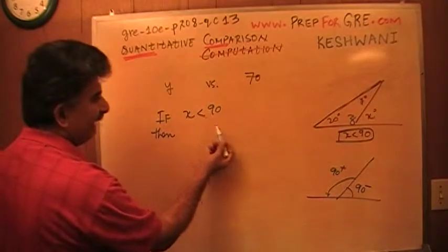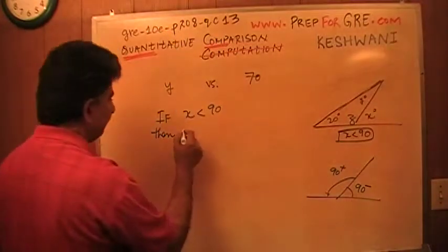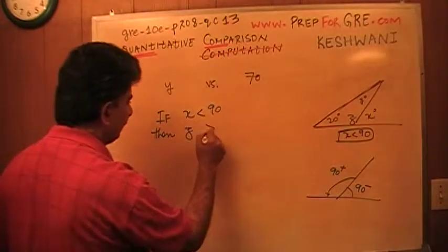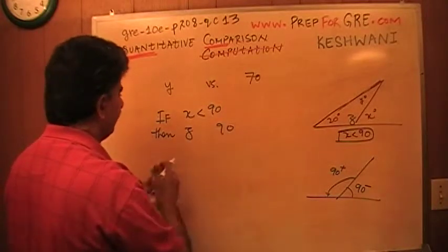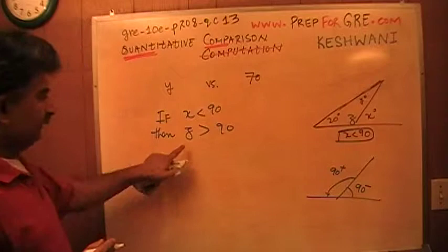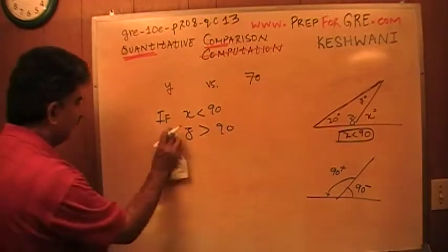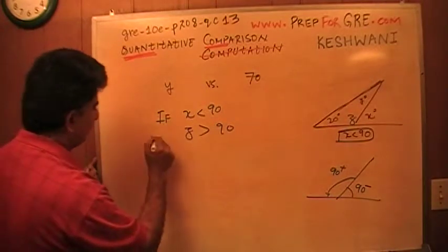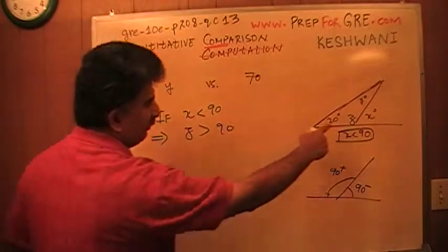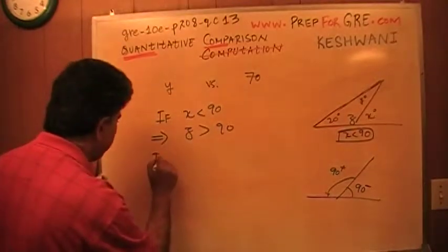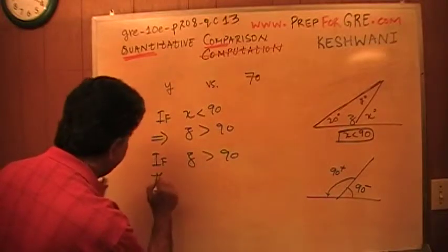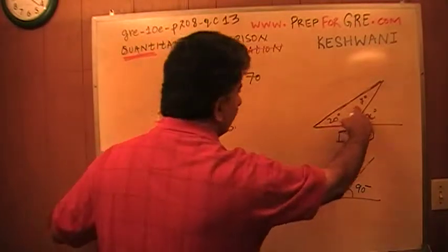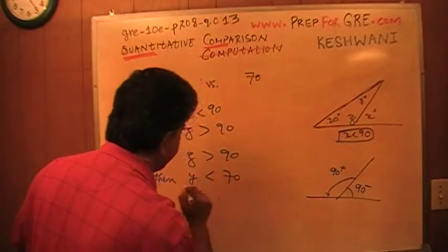So if x is less than 90, then this guy z would have to be more than 90. If x is less than 90, that implies that z has to be more than 90. If we know that z is more than 90, then y would have to be less than 70.